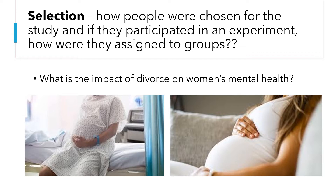The second threat to internal validity is selection, which refers to how people were chosen for the study and, if they participated in an experiment, how they were assigned to groups. For example, if you are studying the impact of divorce on women's mental health but you omit pregnant women because they are sensitive, this introduces selection bias. You may have done it with good intentions, but pregnant women are also women who may go through divorce and experience mental health issues. You need to recognize this bias whether it's in your own or someone else's research.